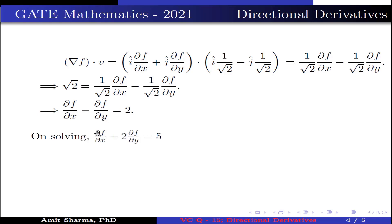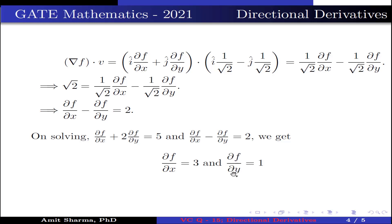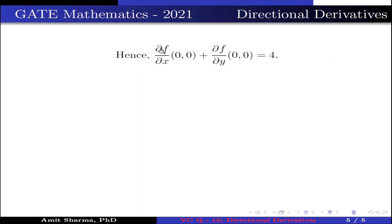Solving the system — ∂f/∂x + 2·∂f/∂y = 5 and ∂f/∂x - ∂f/∂y = 2 — we get ∂f/∂x = 3 and ∂f/∂y = 1. Therefore, ∂f/∂x + ∂f/∂y = 4. Hence, ∂f/∂x(0,0) + ∂f/∂y(0,0) = 4.